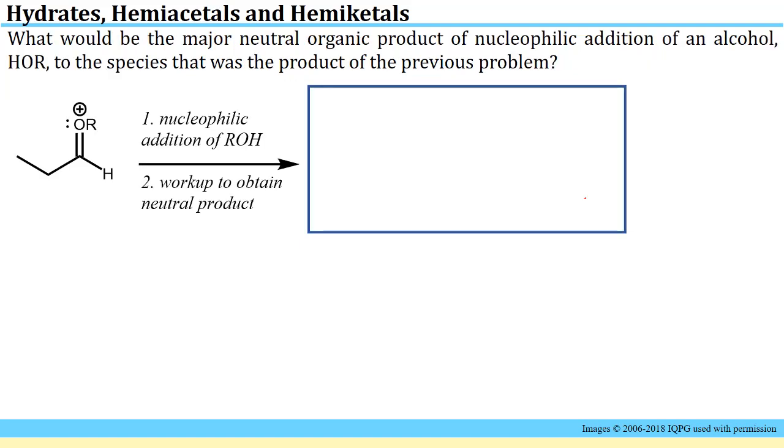The next problem is building upon that previous problem. It's asking us now what would be the major neutral organic product of nucleophilic addition of an alcohol, HOR, to the species that was produced in the previous problem. They've redrawn here the species we just made.